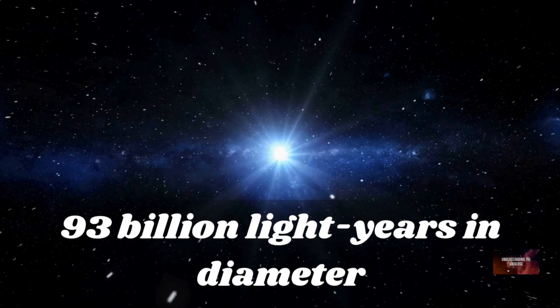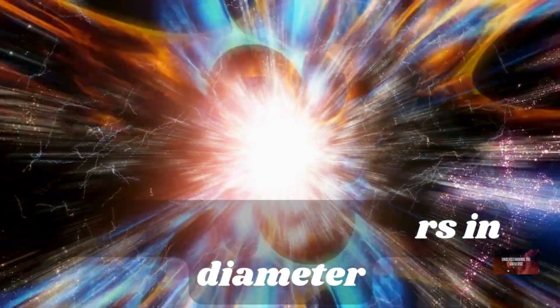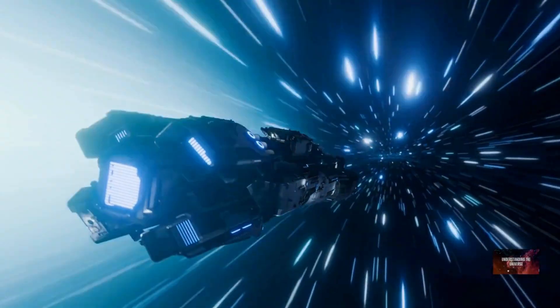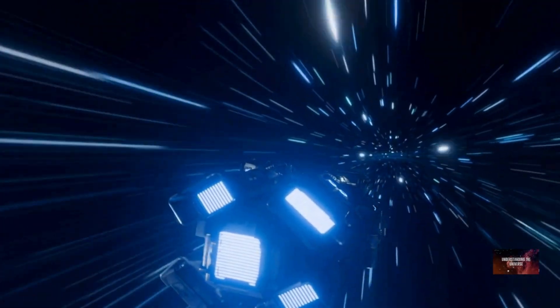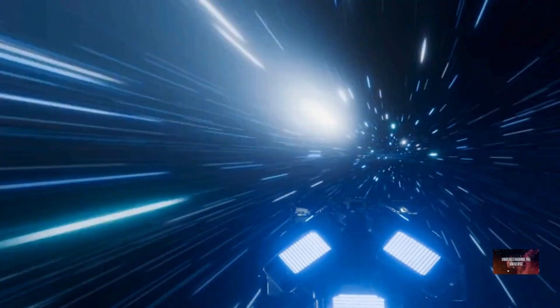To grasp this, we must understand a light-year. It's not a measure of time, but of distance—the incredible distance light travels in one Earth-year. Light, the fastest thing we know, zips through space at about 300,000 kilometers (186,000 miles) per second.